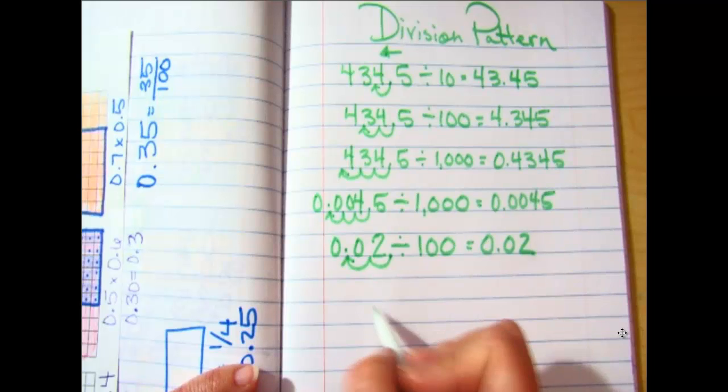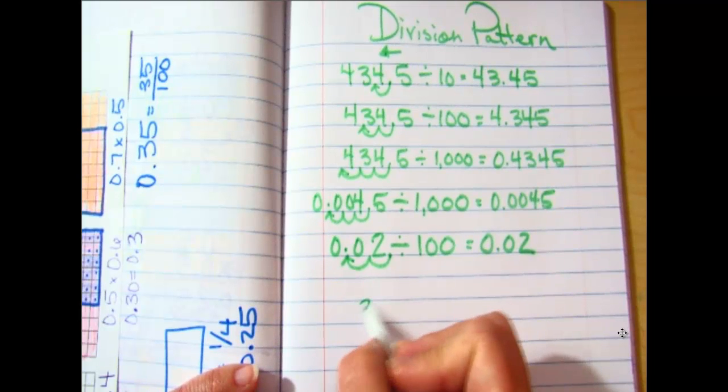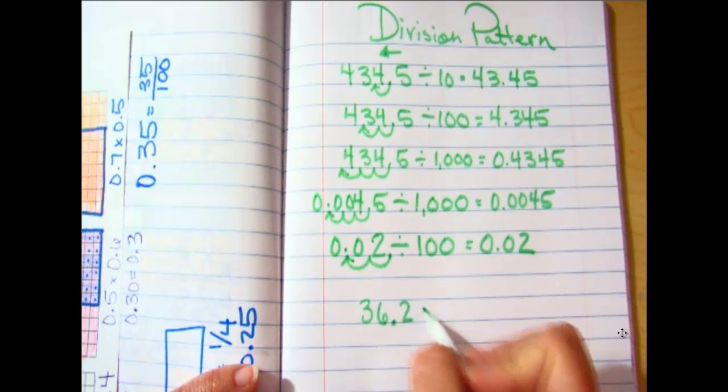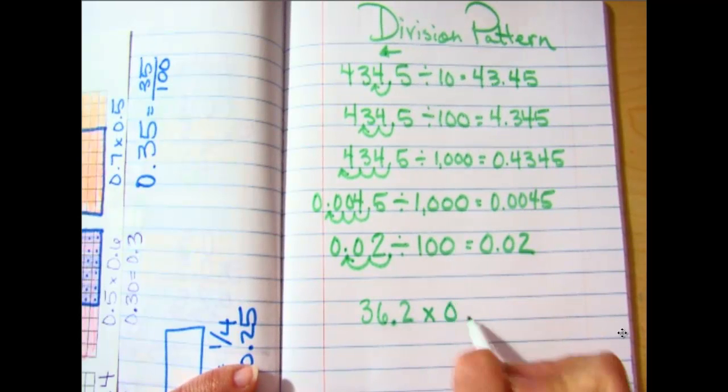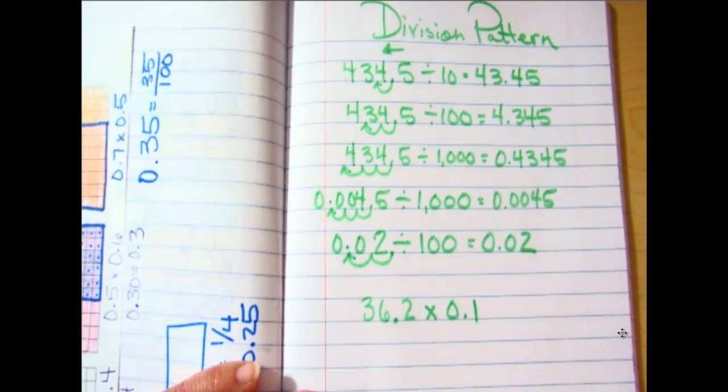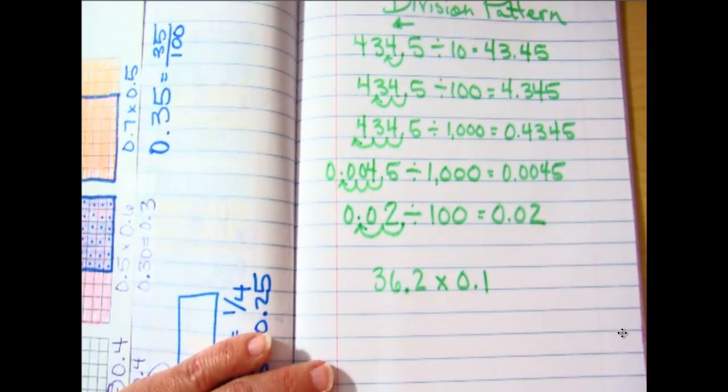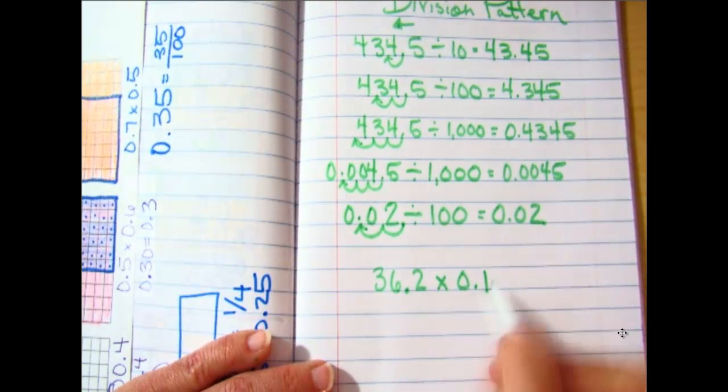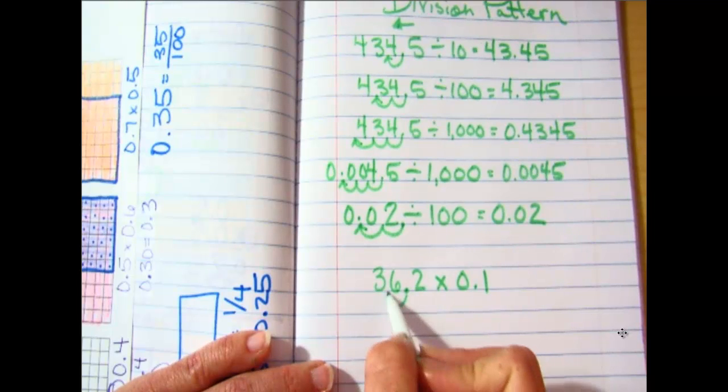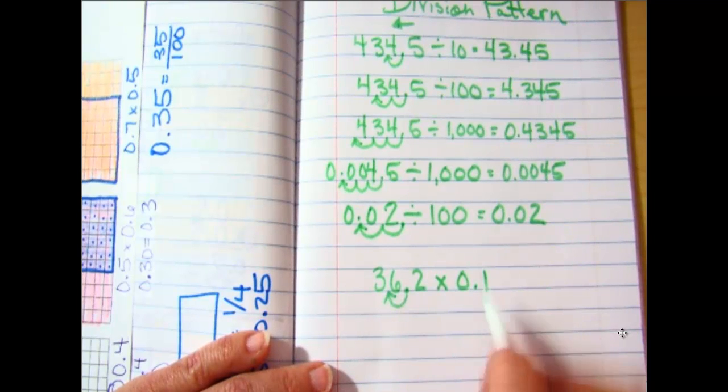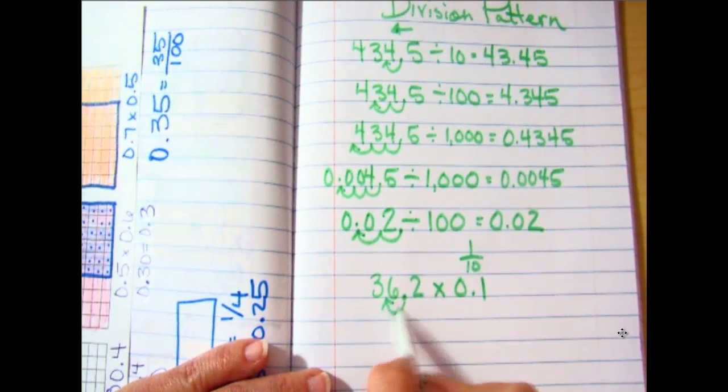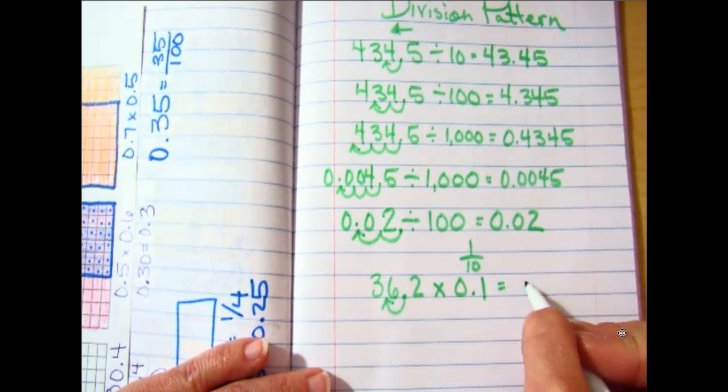And just like our last unit, I could also multiply times one-tenth. If I multiply times 1/10, I'm finding a tiny piece of a tiny piece. Same thing here. Multiply times 1/10, it can be written either way. I'm just going to move it one spot to the left.